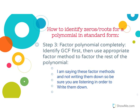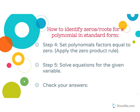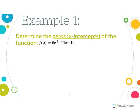Step four: set the polynomial factors equal to zero — this means you are applying the zero product property. Step five: solve the equations for the given variable, most likely x. Then to check your answers, you are going to distribute back through.